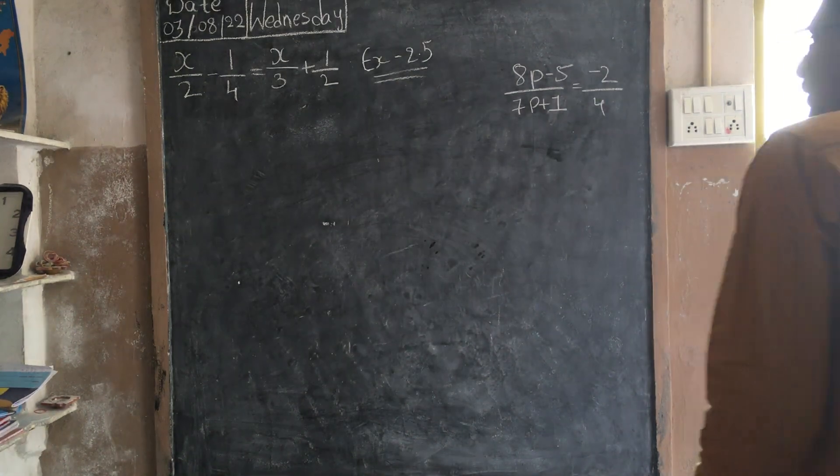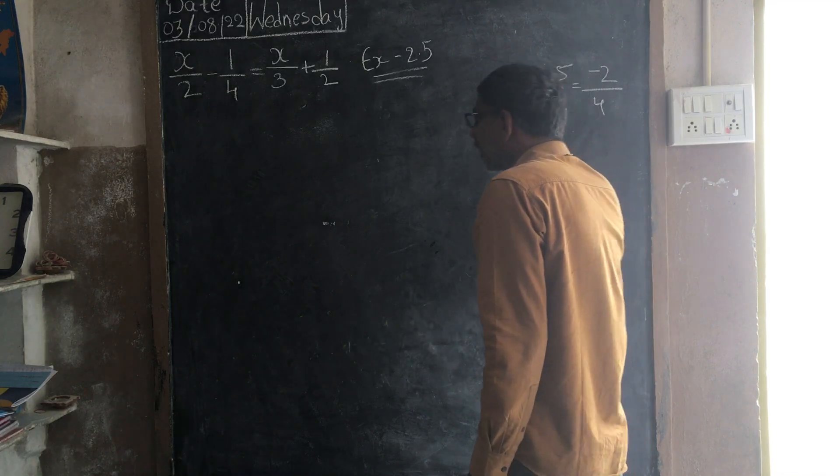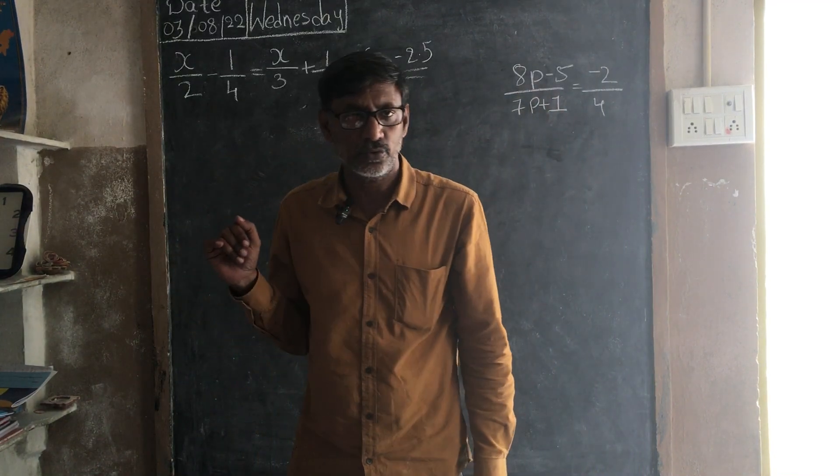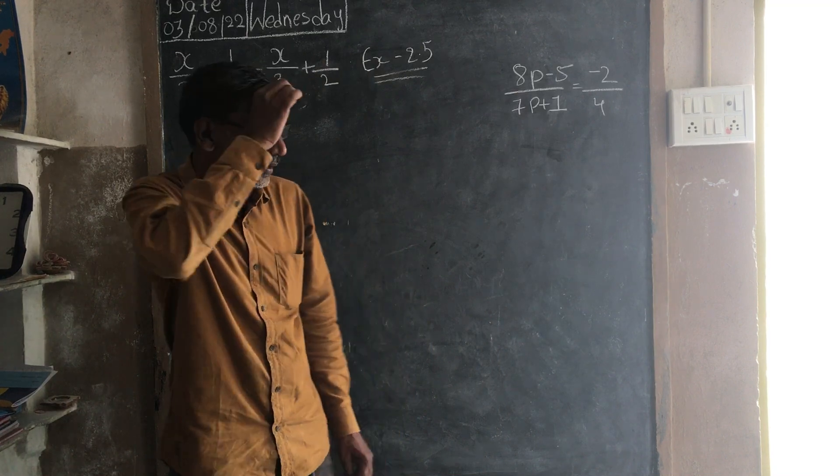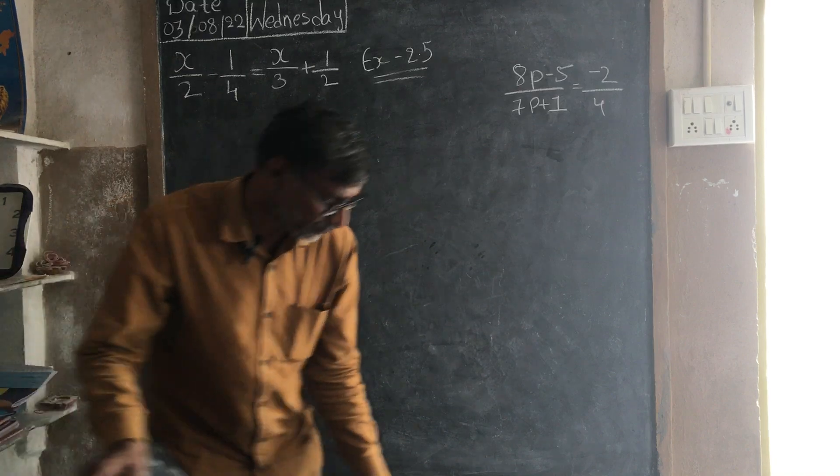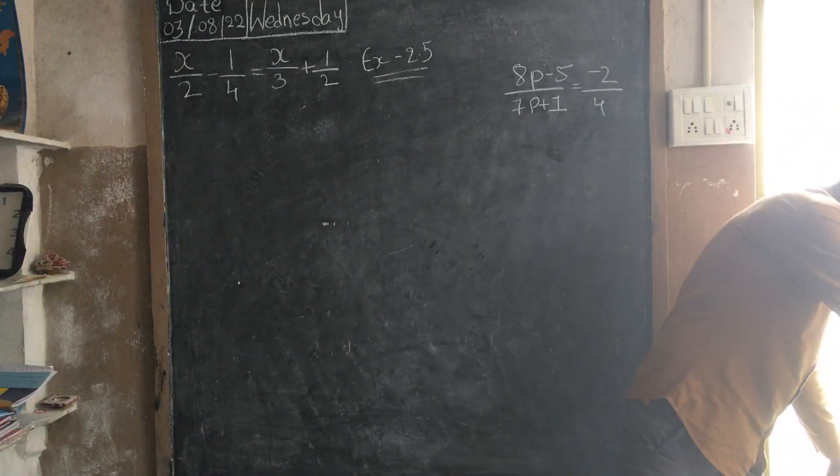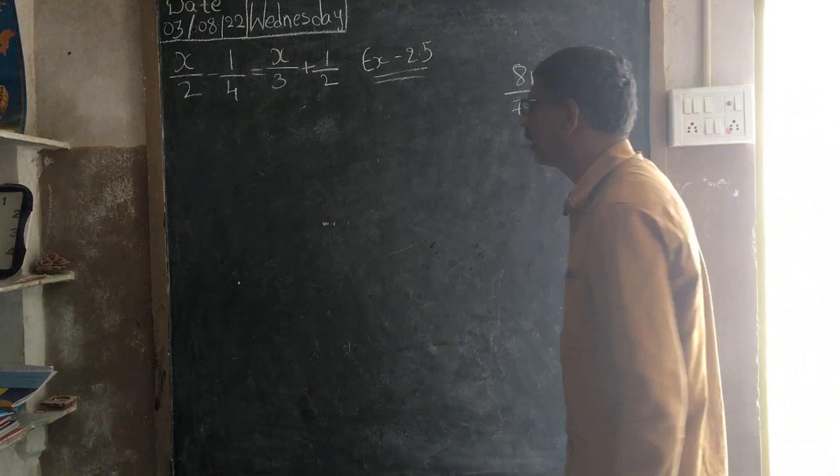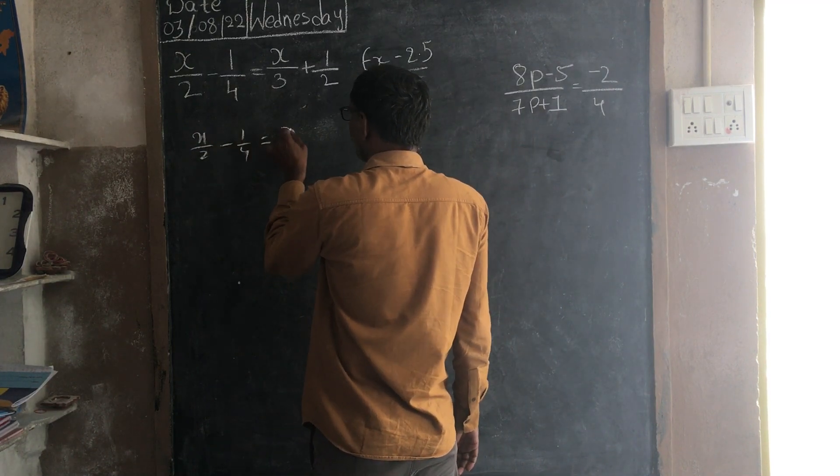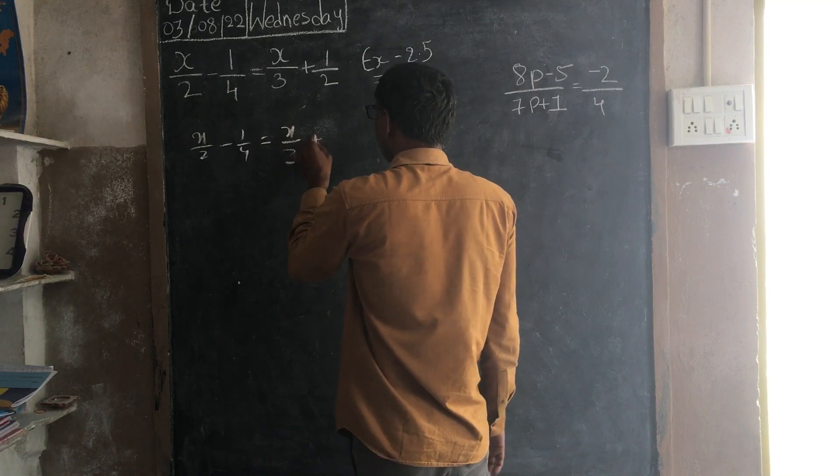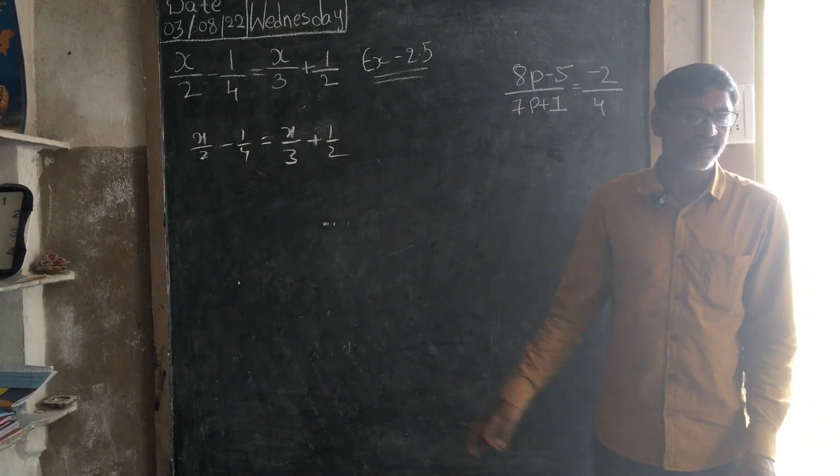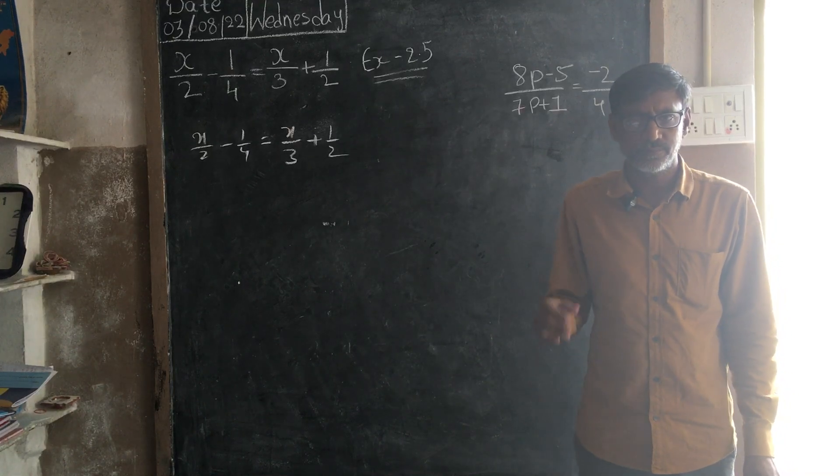Okay everyone, again we will try two more problems from the same exercise 2.1. I will try this one first. So, x by 2 minus 1 by 4 is equal to x by 3 plus 1 by 2. This is my question, it is my linear equation, solve for x.